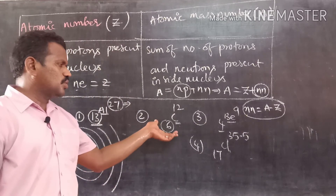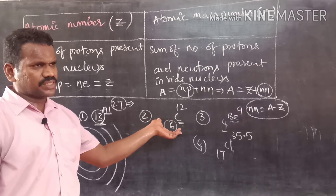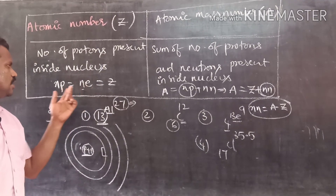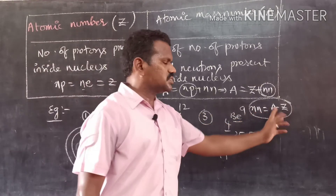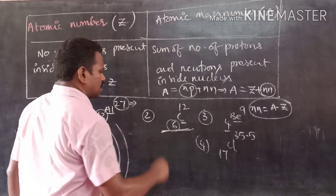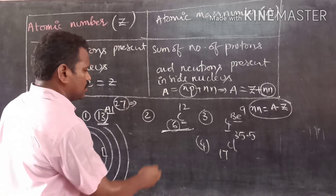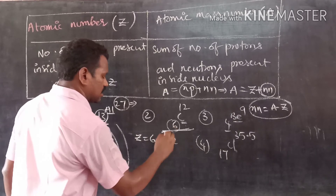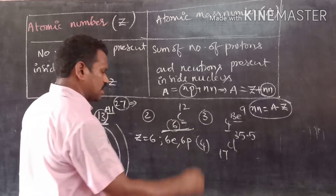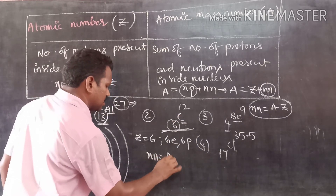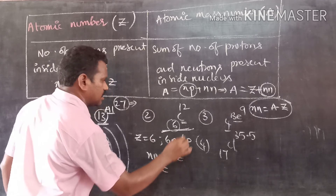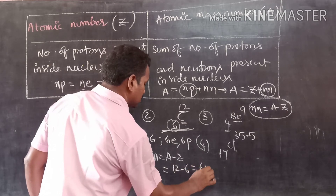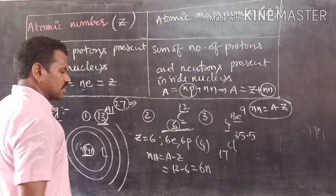If you know an element's representation, you can find how many electrons, protons, and neutrons there are. For example, carbon 6-C-12: atomic number Z = 6, meaning it contains 6 electrons and 6 protons. The number of neutrons NN = A − Z = 12 − 6 = 6 neutrons.